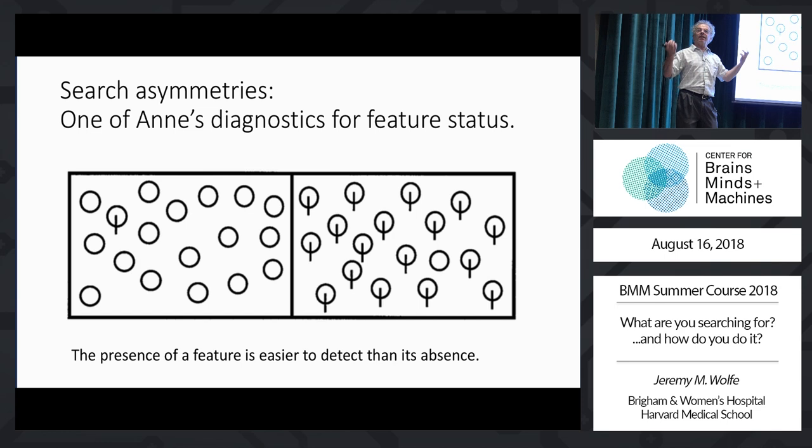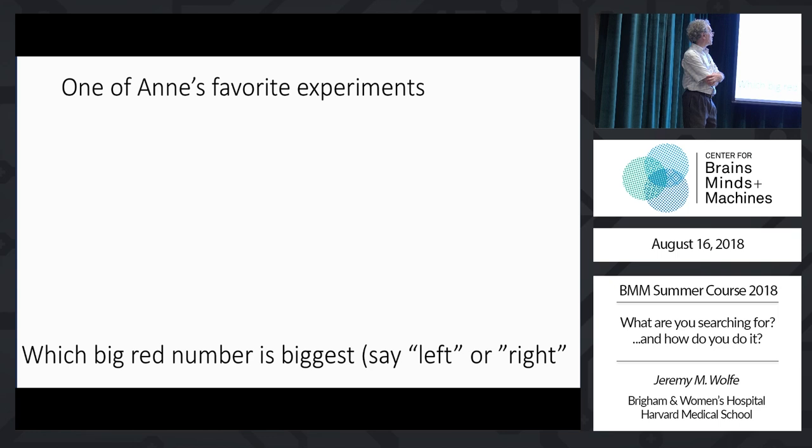Another classic property of features is that they support search asymmetries: the presence of a feature is much easier to detect among its absence than vice versa. If you're looking for a Q among O's, that's convincingly easier than searching for an O among Q's. All of these things have been used as ways of trying to figure out what the fundamental features are that are extracted in early vision for purposes of visual search and visual attention.